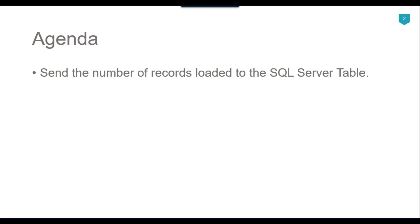Email notification is a very important part in the SSIS package. Normally when an SSIS package starts we send an email that the package has been started, and ideally after the completion of the SSIS package it should send another email that the package has been completed, so that we know it completed successfully. In case of failure, we send an email with the actual error message. In this video we will send two notifications: one on package start and another on package finish with how many records were loaded.